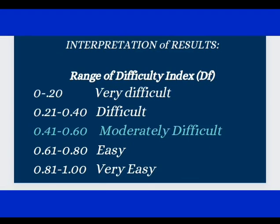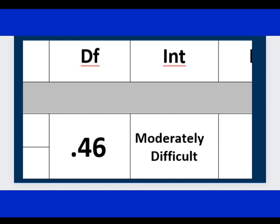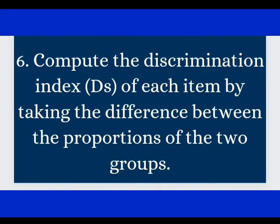So that is for the difficulty level or difficulty index. Next is we need to determine the Ds. So this is simply the discrimination index. In the context of assessment, discrimination is the power of an item to separate the upper achievers and lower achievers. So we need to compute the discrimination index of each item by taking the difference between the proportions of the two groups.